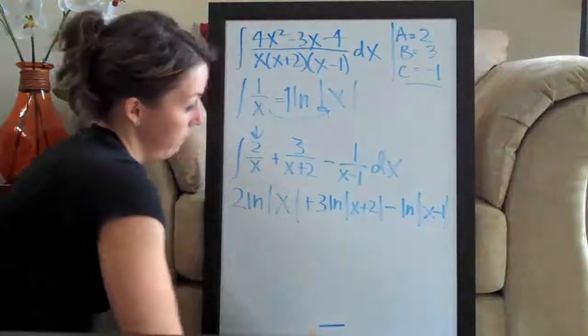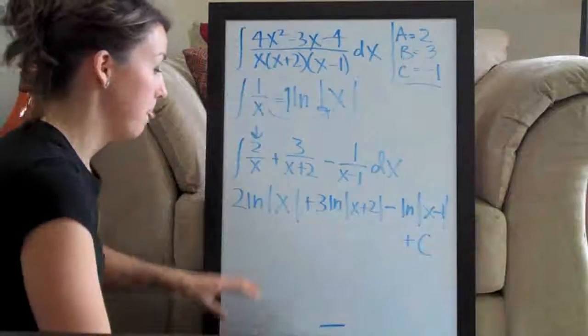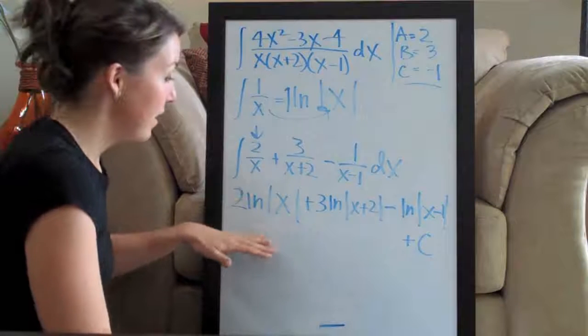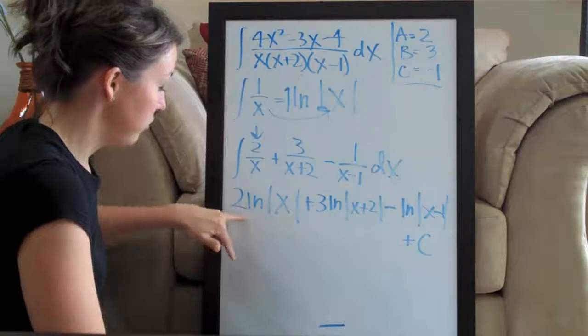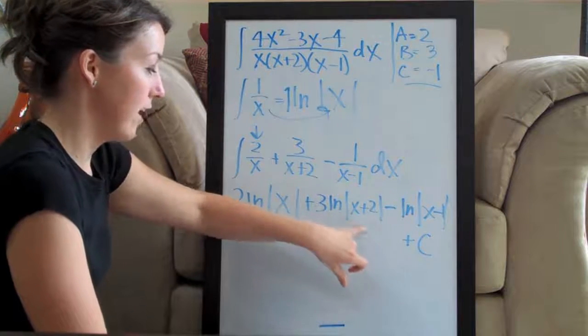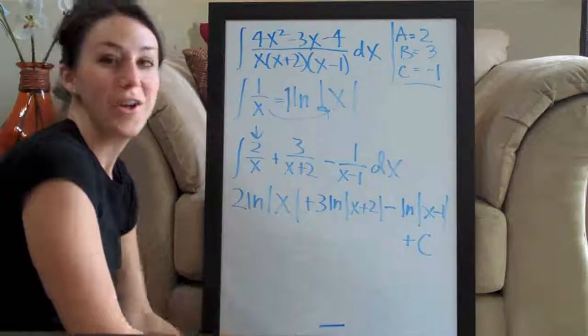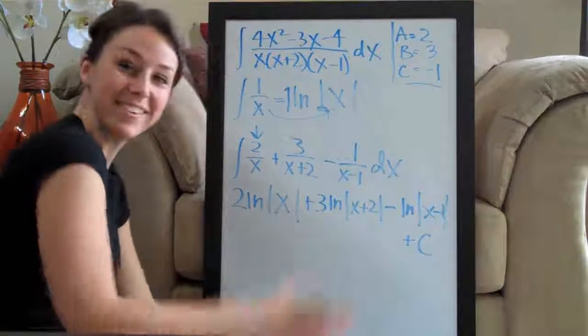And then, always, whenever taking the integral, don't forget to add c to account for the constant. But, that is actually going to be our final answer. 2 ln of the absolute value of x plus 3 ln of the absolute value of x plus 2 minus ln of the absolute value of x minus 1 plus c. Thanks, guys. I'll see you next time.